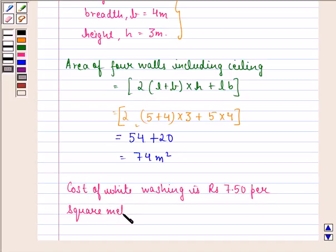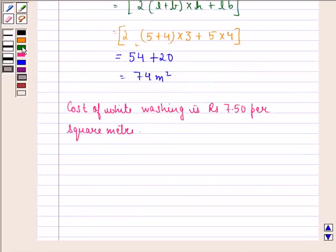Since for 1 square meter it is rupees 7.50, therefore cost of white washing 74 meter square of area is equal to rupees 74 into 7.50.